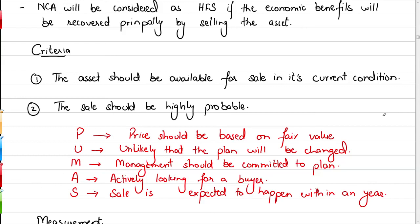The sale is expected to happen within one year. It is not always possible to complete the sale within one year. If the sale could not take place due to uncontrollable factors, you can still continue to consider the asset as held for sale, provided you still wish to sell it. However, if it was due to controllable factors — for example, management was not negotiating well or not putting in effort to sell — then you must revert to its original accounting, such as IAS 16 for property, plant and equipment.